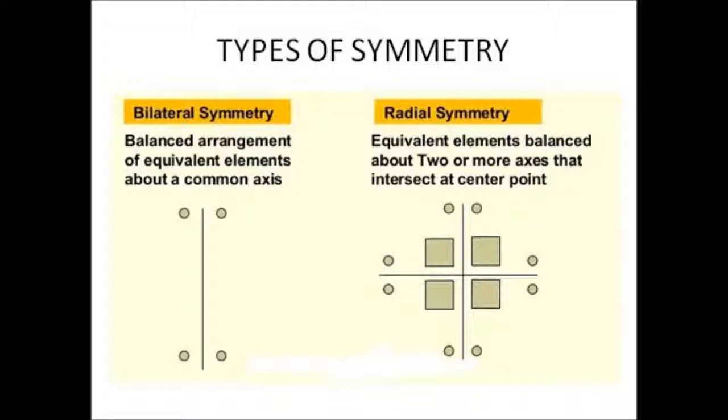Radial symmetry: equivalent elements balanced among two or more axes that intersect at a center point. When two or more axes of symmetry are present, it is known as radial symmetry.